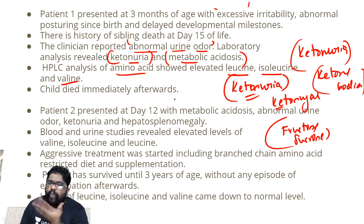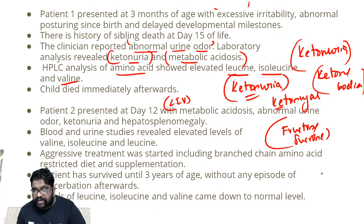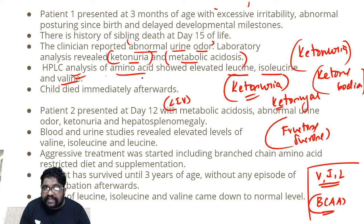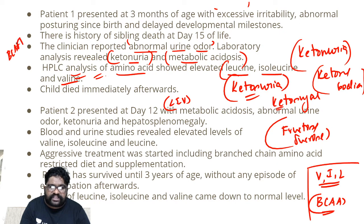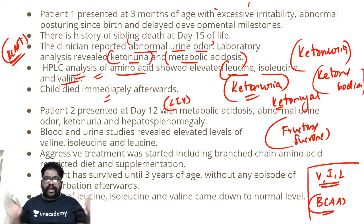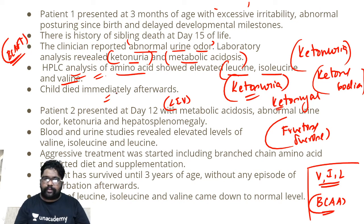What is common between leucine, isoleucine, and valine? They are branched-chain amino acids. HPLC analysis of the urine showed elevated amino acid levels, so this is a case of branched-chain amino acid elevation. The child had died immediately afterwards. This indicates an abnormality in branched-chain amino acid metabolism.